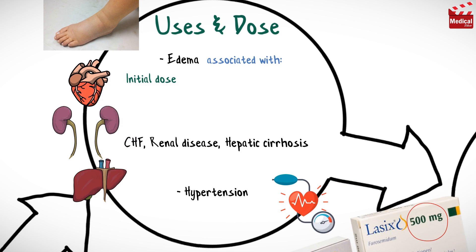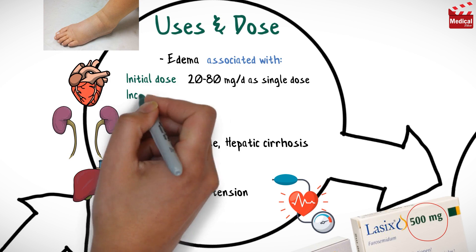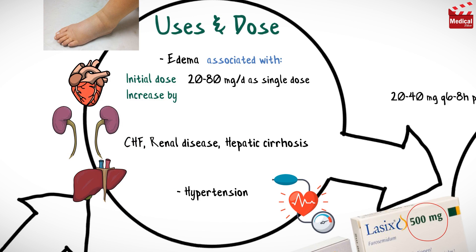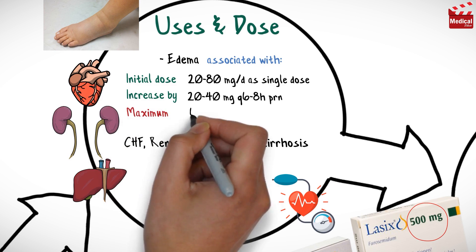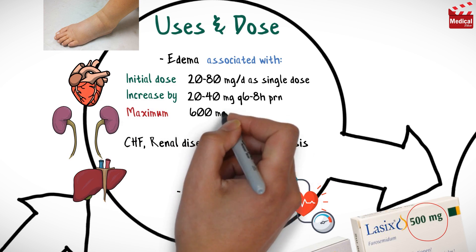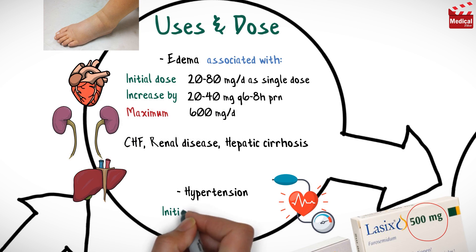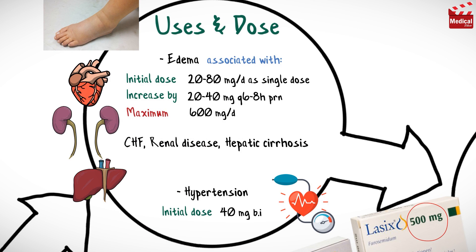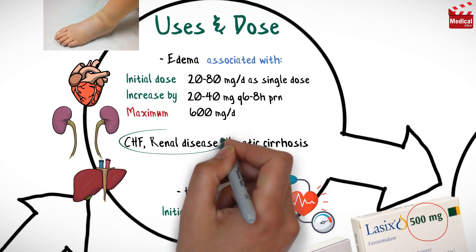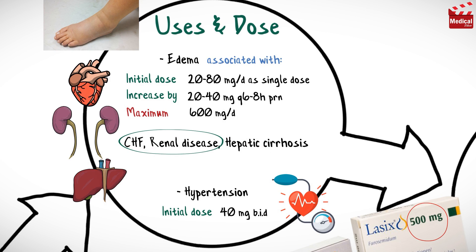The usual initial dose for edema for adults is 20 to 80 milligrams per day as a single dose, that may be increased by 20 to 40 milligrams every 6 to 8 hours, and the maximum dose is 600 milligrams per day. The usual initial dose for hypertension for adults is 40 milligrams twice a day.